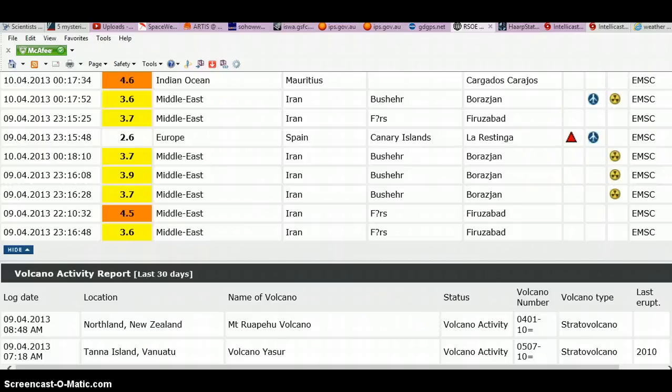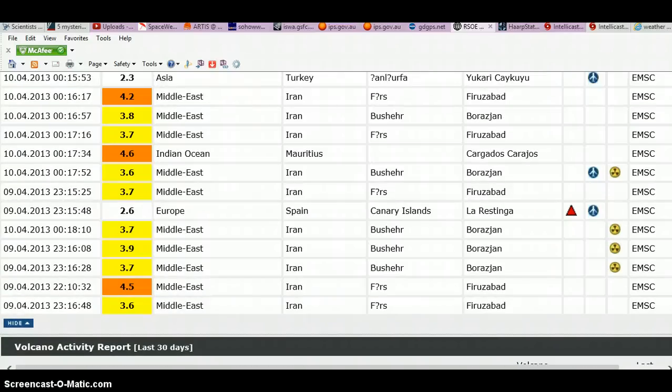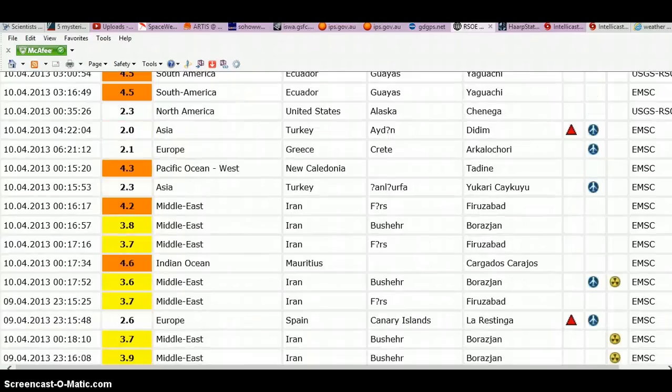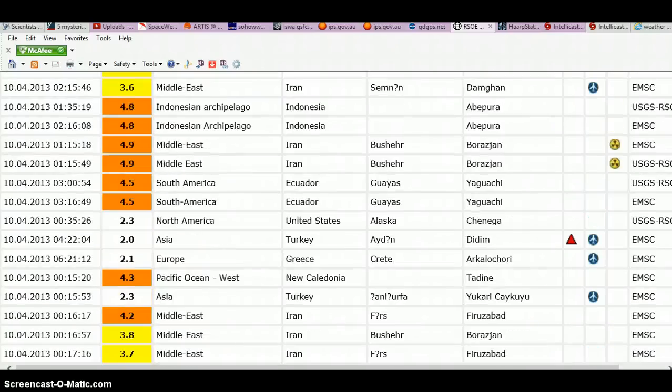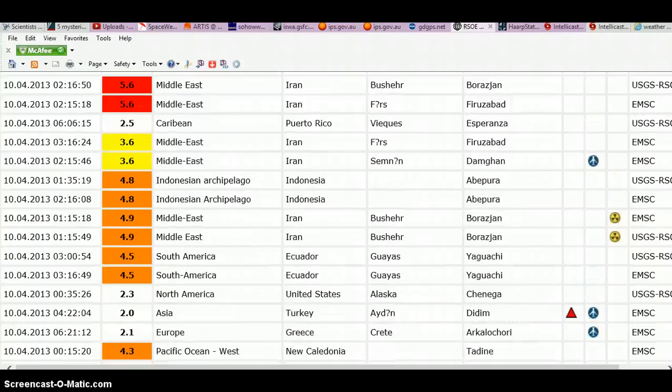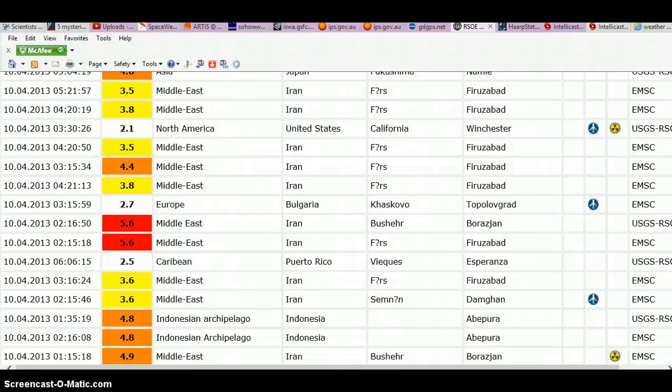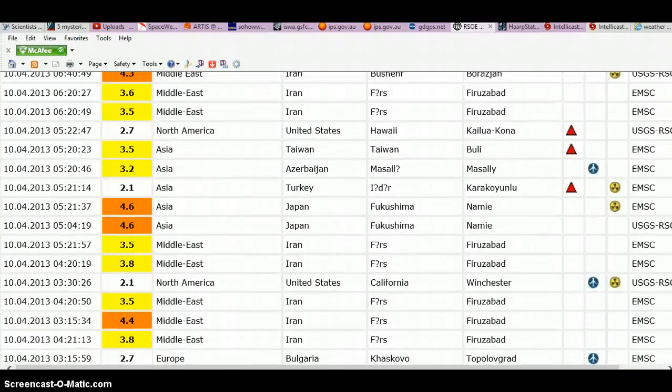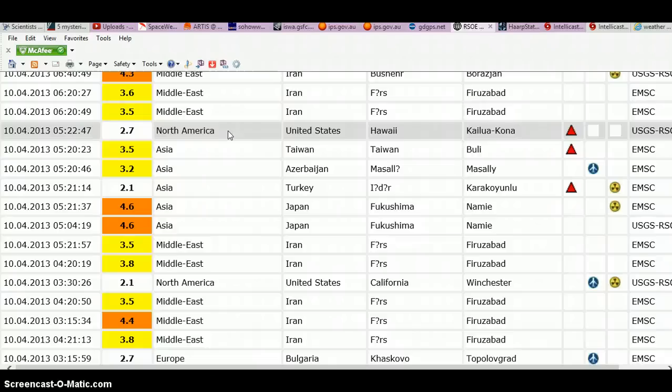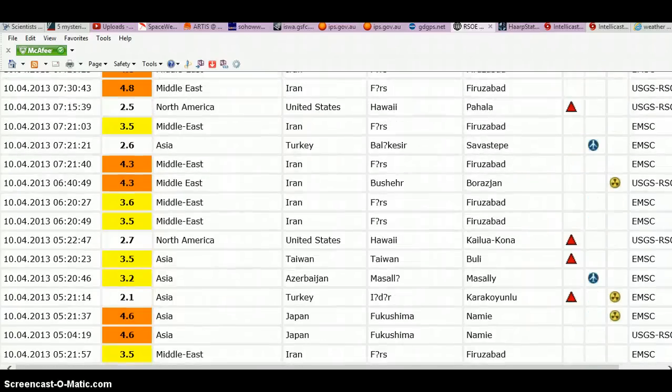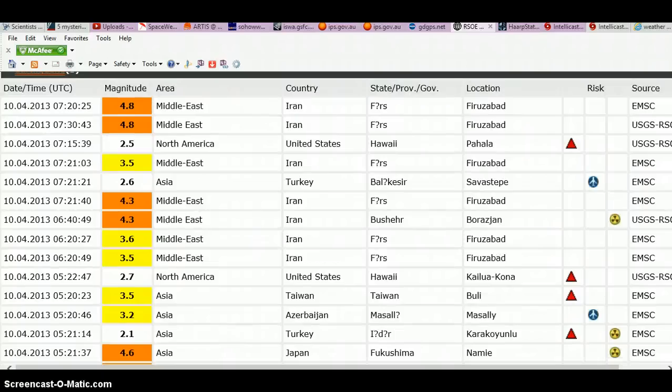Let's get to 4.0 and above earthquakes and volcano activities. We had a 4.5 in Iran, 2.6 Spain on a volcano, 4.6 Indian Ocean, 4.2 Iran, 4.3 New Caledonia in the Pacific Ocean, 2.0 Turkey on a volcano, 4.5 Ecuador, 4.5 Ecuador, 4.9 Iran, 4.9 Iran, 4.8 Indonesia, 4.8 Indonesia, 5.6 Iran, 5.6 Iran, 5.6 Iran, 4.4 Iran. You can see all these volcanoes for Iran. 4.6 Asia, Japan and Fukushima, warnings and watches for Fukushima. 2.1 Turkey on top of the volcano, 3.5 Taiwan on a volcano, 2.7 North America Hawaii on a volcano, 4.3 Iran, 4.3 Iran, 2.5 Hawaii on a volcano, 4.8 just happened in Iran.